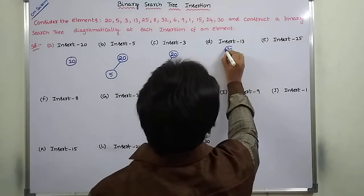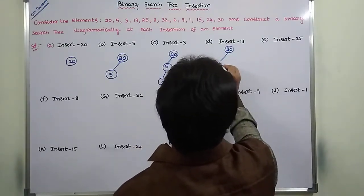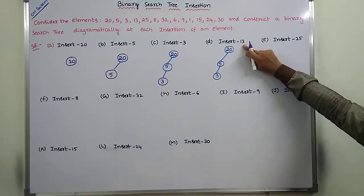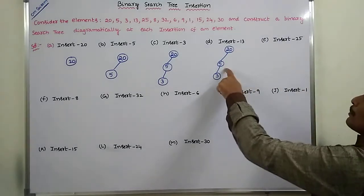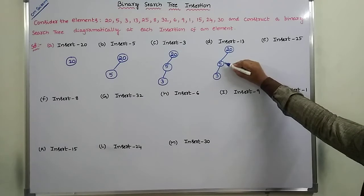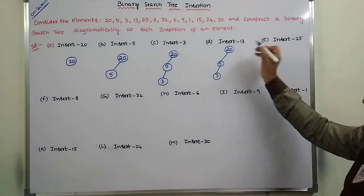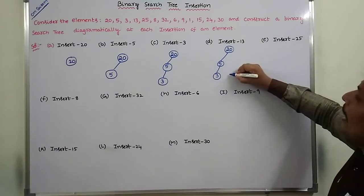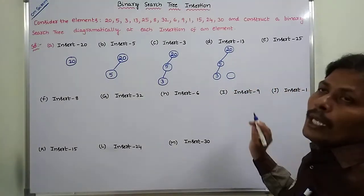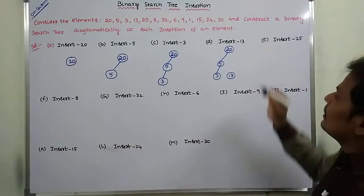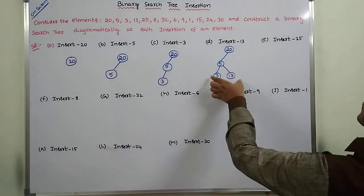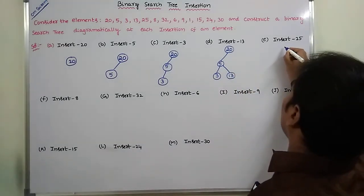Next, we want to insert element 13 into the existing binary search tree. First, 13 is compared with 20 — 13 is less than 20, so go to the left subtree where node 5 is there. 13 is compared with 5 — 13 is greater than 5, so go to the right subtree. Here, the right subtree is empty, so we create a new node and insert that value. 13 becomes the right child of node 5. This is the binary search tree after inserting element 13.